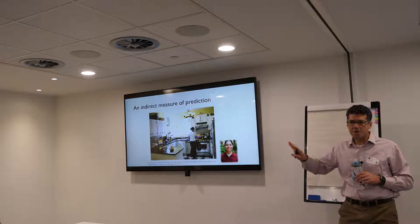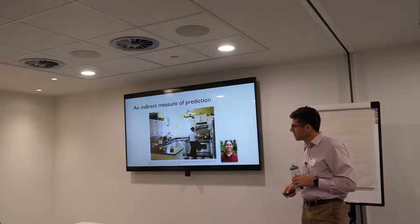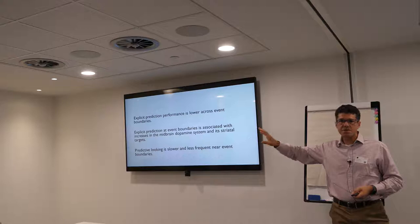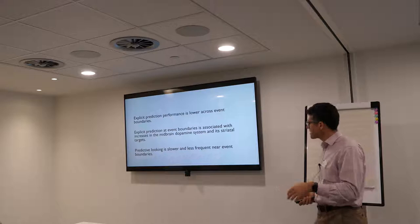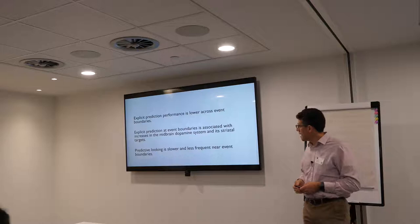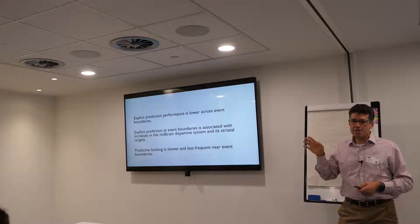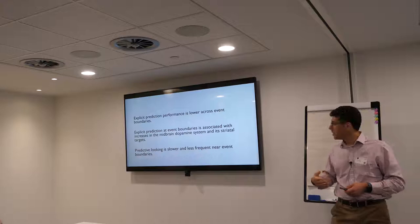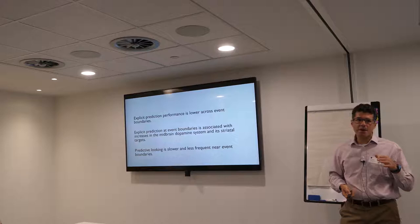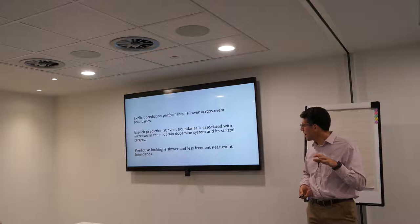On the explicit task, people's ability to correctly choose which picture is the right one is knocked down a bit if they're trying to predict across an event boundary. In the scanner, we find phasic increases in brain areas associated with signaling prediction error — particularly the midbrain dopamine system — when you're trying to make a prediction in the more difficult situation near an event boundary. And in the predictive looking case, people get to target objects more slowly and with less accuracy when that reach is happening near an event boundary.